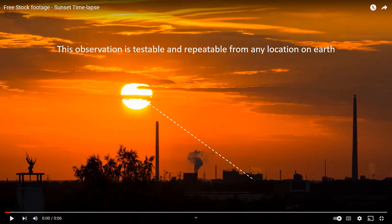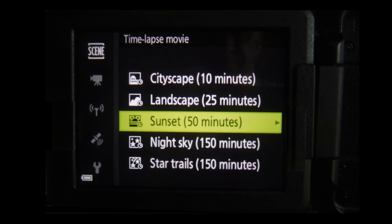Now this is an observation that is testable and repeatable from any location on Earth. Anybody can do this. So in this video I'm going to use time lapses that I made of both the setting and rising Sun and I'm going to be able to add some additional information, a timed measurement of the Sun along that path. And that is quite easy to do since the P900 has a time-lapse feature.